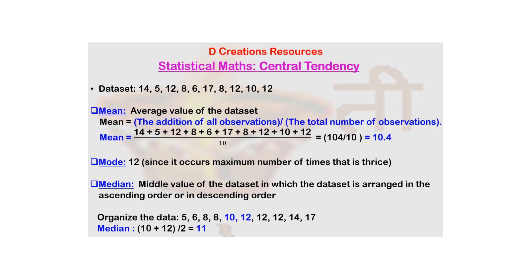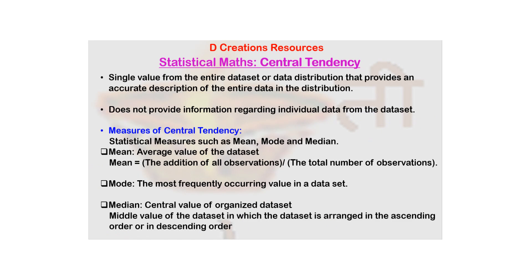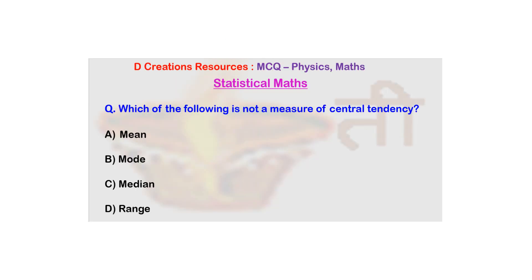So going back, central tendency is basically this statistical measure like mean, mode, or median. And you have seen that in each case there was a single number which was associated with this particular data set. Now coming back to this, the answer is trivial. Answer is really simple.